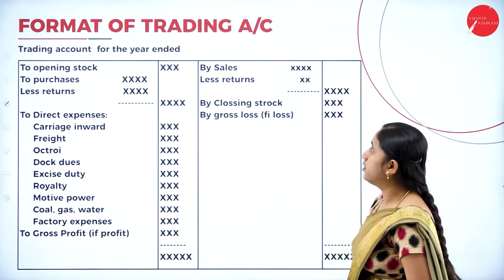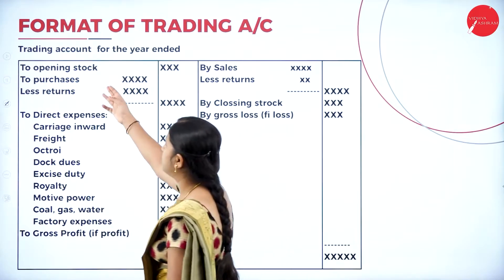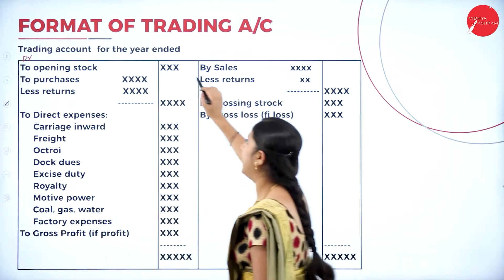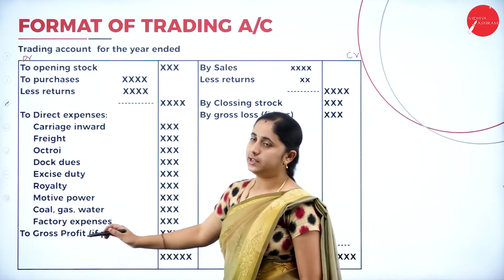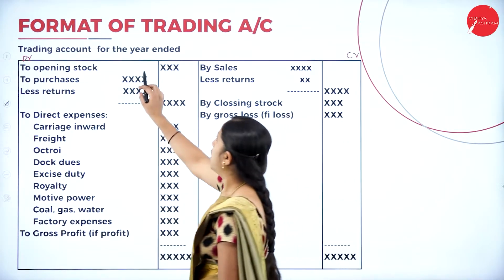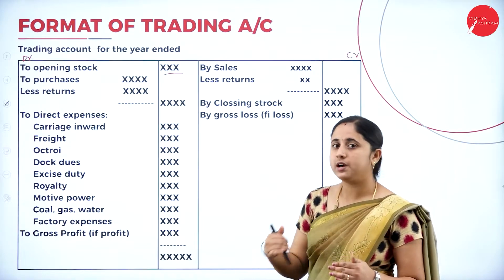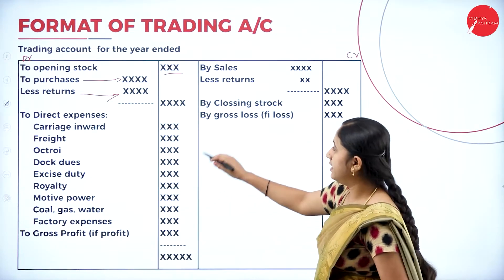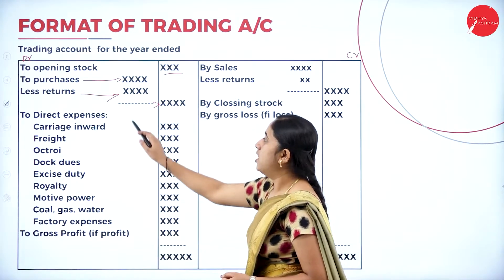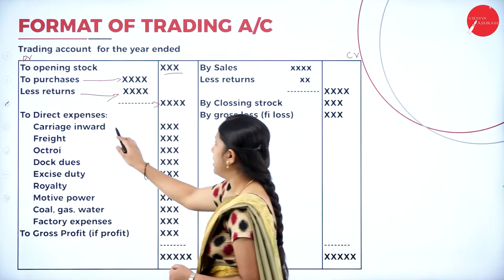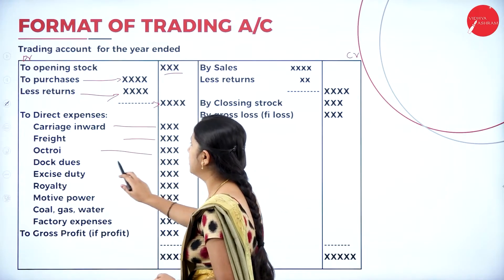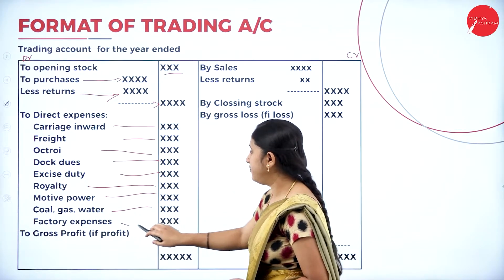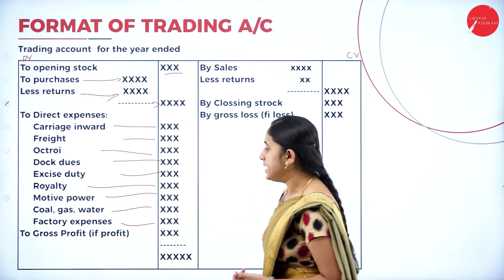Let's look at the format or pro forma of the trading account. In the trading account, we first consider opening stock — the previous year's closing stock becomes the opening stock for the current year. Then purchase amount; if there is any purchase return, deduct it from the purchase in the outer column. Then all the direct expenses, which include carriage inward, freight, octroi, dock duties, excise duty, royalty, motive power, coal, gas, water, and factory expenses such as factory rent.